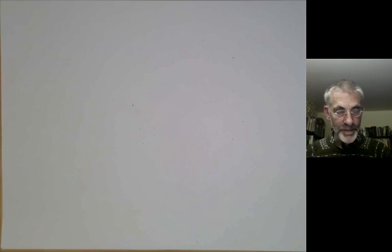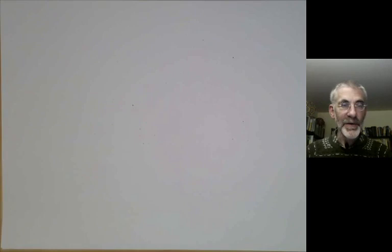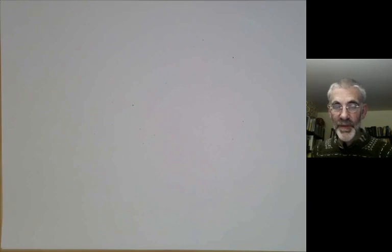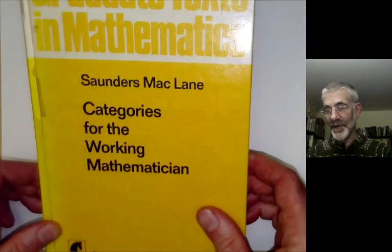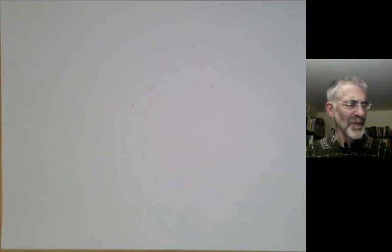This lecture is part of an online course on category theory. This is the introductory lecture where I'm going to explain what a category is and give a few examples of them. If you want a textbook, the one I'm going to suggest is the classical book by Saunders MacLane, 'Categories for the Working Mathematician.' Saunders MacLane was one of the two founders of category theory and this was more or less the original book on it.